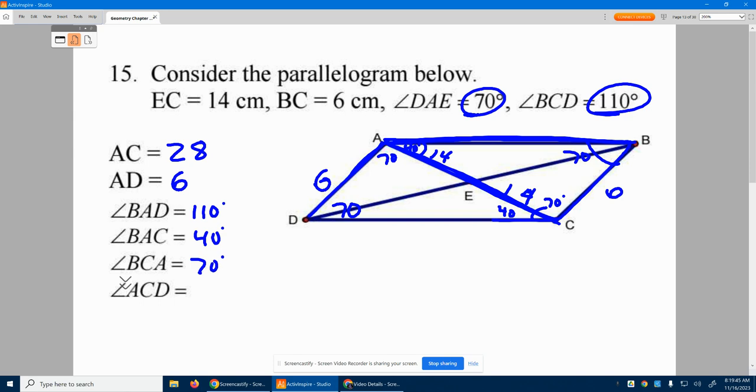And finally, angle ACD. A down here to C over to D, 40 degrees.